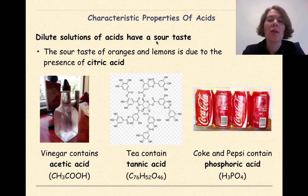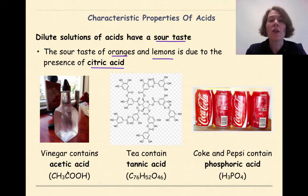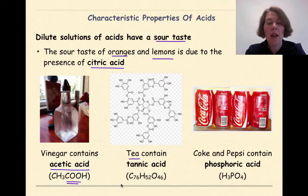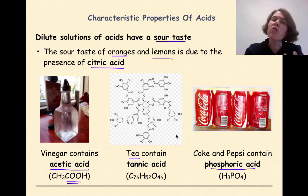Dilute solutions of acids will have a sour taste. If you've ever had a Sour Patch Kid or any sour type of candy, you know what I'm talking about. The sour taste of oranges and lemons is due to the presence of citric acid. Vinegar contains acetic acid, CH3COOH. We talked about this in organic acid, this COO group down here. Tannic acid is part of tea, and it's got a pretty intense molecular formula down here, C76H52O46. And Coke and Pepsi contain phosphoric acid, H3PO4. So all of these things have acids associated with them, not really strong acids, but they do have acids which gives it that sour or sharp taste.